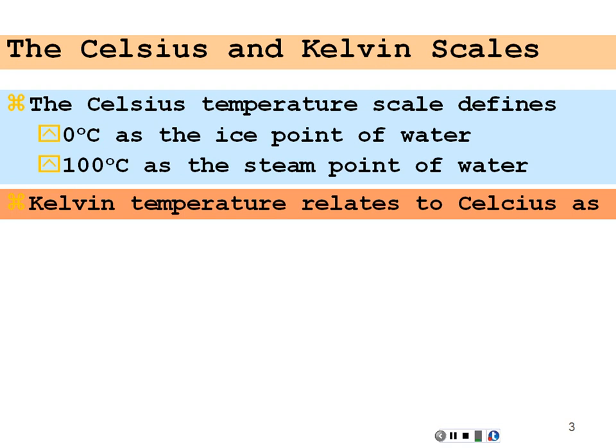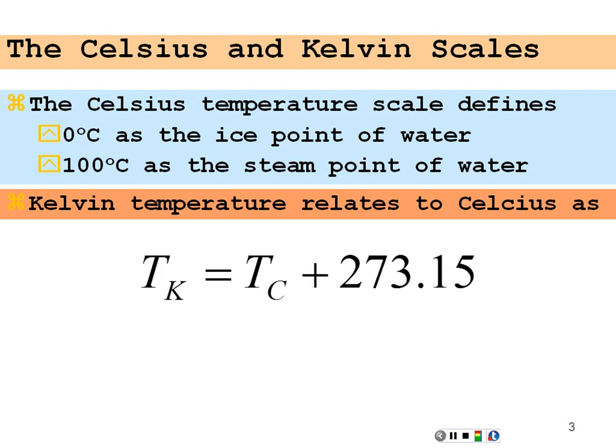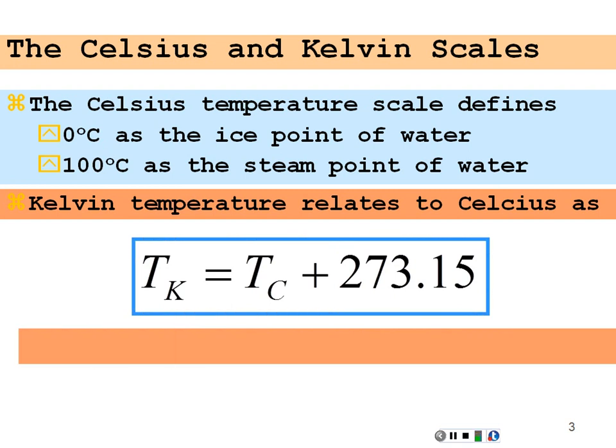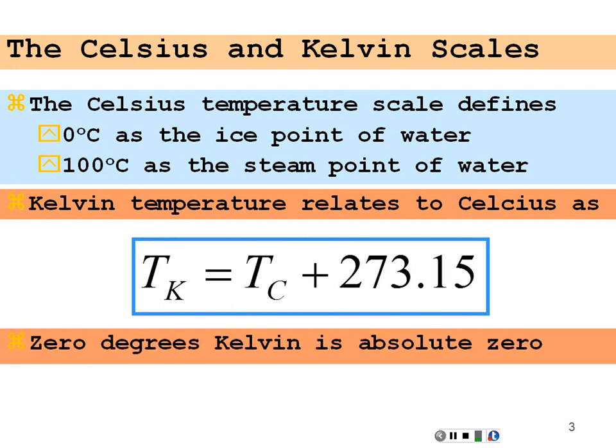The Kelvin temperature relates to the Celsius temperature. Temperature in Kelvin is the Celsius temperature plus 273.15. This allows us to establish the Kelvin temperature as starting at absolute zero. So zero on the Kelvin scale is actually zero absolute.